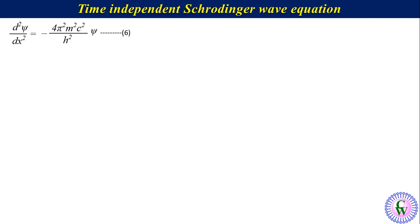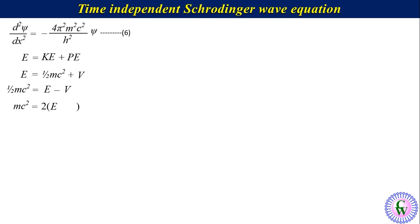We know that total energy E equals kinetic energy plus potential energy, or E equals ½mc² plus V, where ½mc² is the kinetic energy and V is the potential energy. This can be rearranged as ½mc² equals E minus V, or mc² equals 2(E minus V). Multiplying both sides by m gives m²c² equals 2m(E minus V), equation number 7.